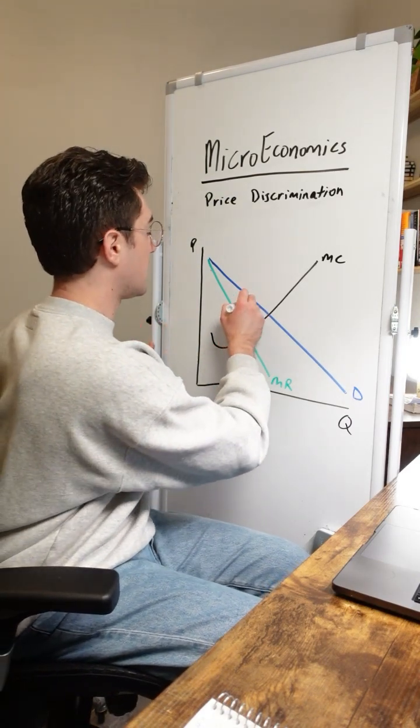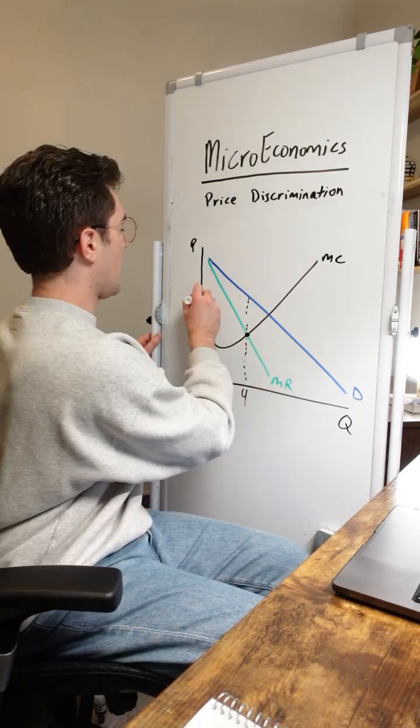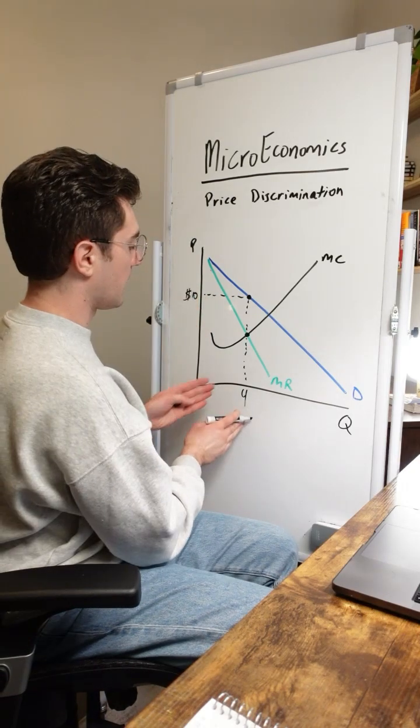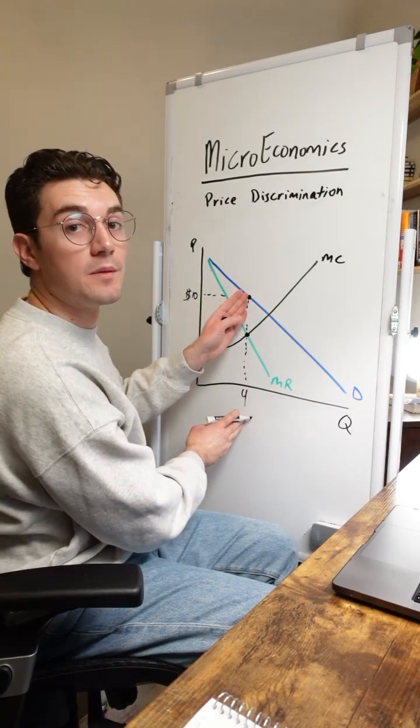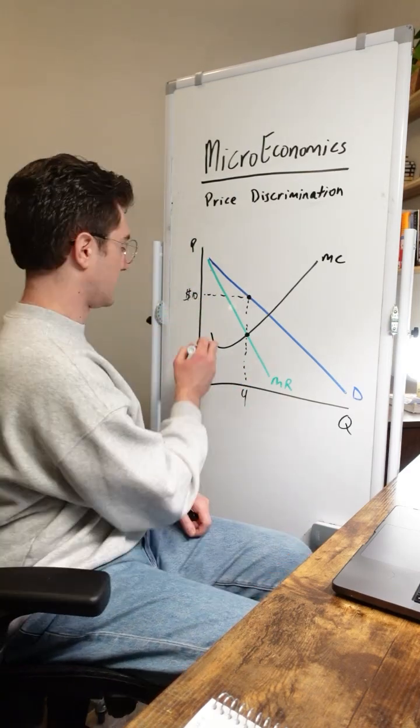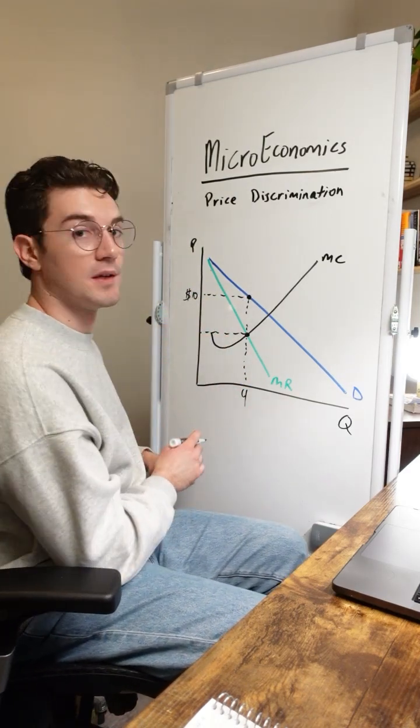And then remember, we got to go up to the demand curve with monopolies and then go to the left to derive price. We'll call this 10 bucks. Because at four units, consumers are willing to pay 10 bucks per unit because demand is our willingness to pay. Don't make the mistake of just going across here to find price for monopolies.